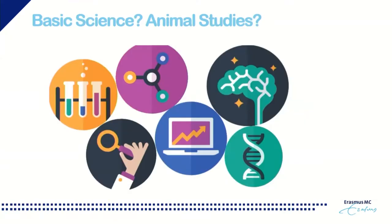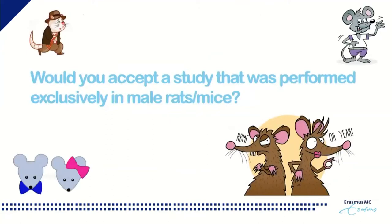Thank you very much, Mariam. I will continue with some questions about basic science and animal studies. A question that may come up is: we have to look at gender and sex in patients, but what about animal models? Should we dogmatically perform all animal experiments in both male and female animals, or should we accept a study performed exclusively in male rats and mice? What are the advantages and disadvantages?